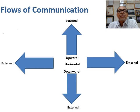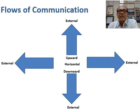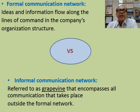Communication can flow upward, downward, internally, and externally. If I say something to my boss, my boss must understand. If I say something to my lecturers, they must understand. If I say something to external parties, those people must understand. Communication does not flow only in one direction. Formal communication flows along the lines of command in the company's organization structure, whereas informal communication — referred to as the grapevine — encompasses communication that takes place outside the formal channels.